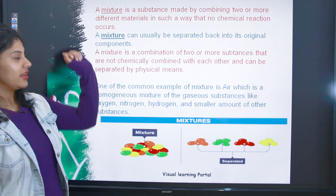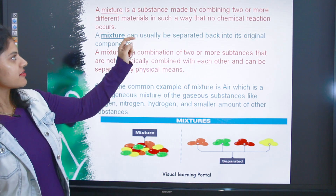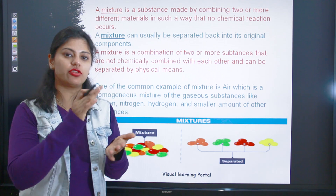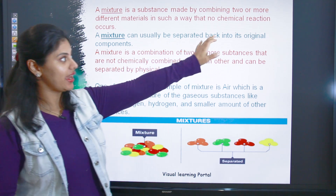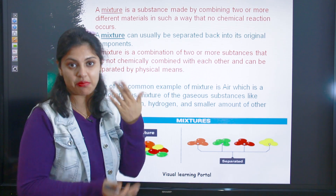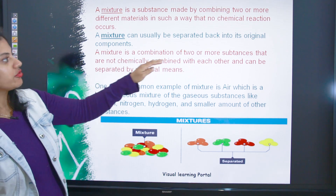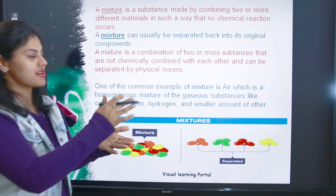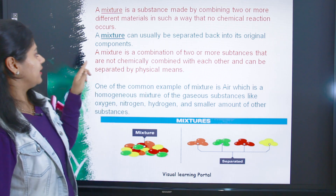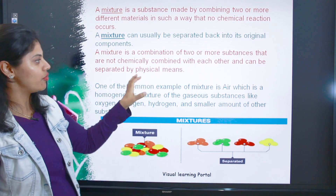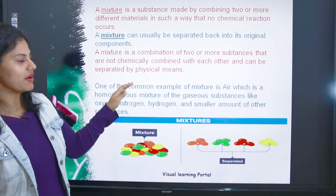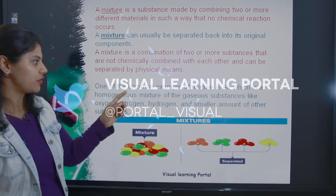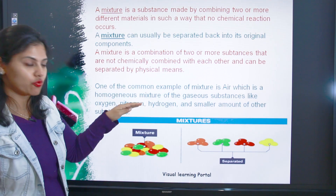A mixture is a substance made by combining two or more different materials in such a way that no chemical reaction occurs. Do ya do se zyada cheezein combine karengi — teen, chaar — but iske andar koi chemical reaction nahi hogi. A mixture can usually be separated back into its original components through various separation processes. A mixture is a combination of two or more substances that are not chemically combined and can be separated by physical means. One common example is air — atmosphere — which is a homogeneous gaseous mixture of oxygen, nitrogen, hydrogen, and smaller amounts of other substances.